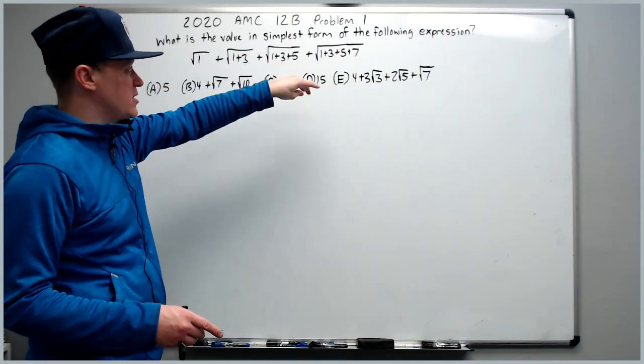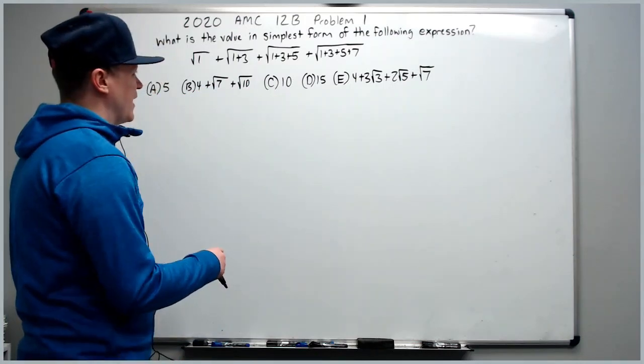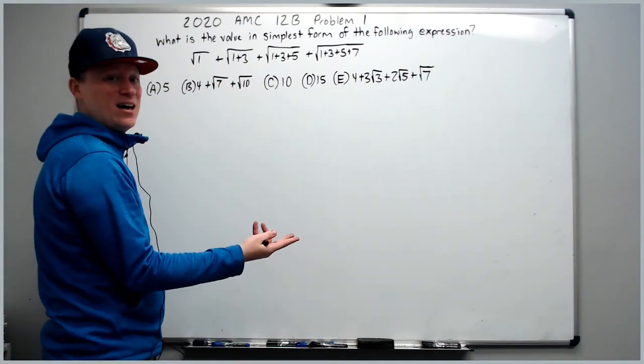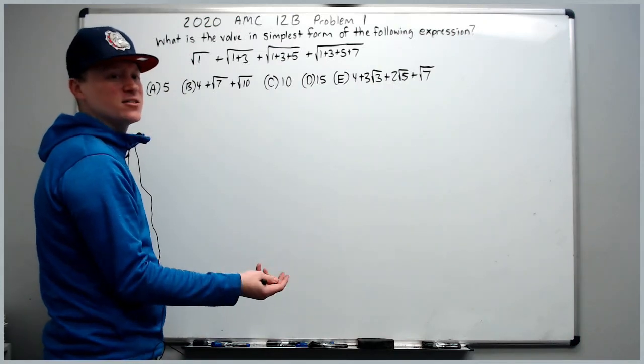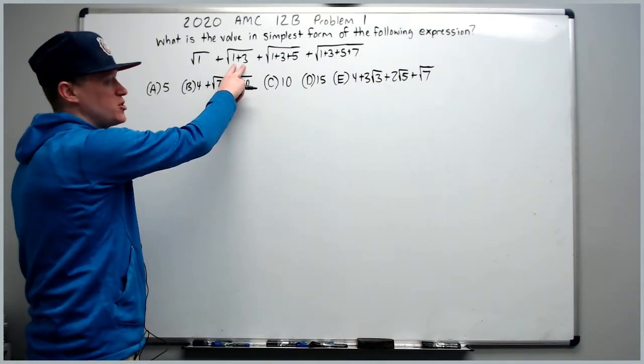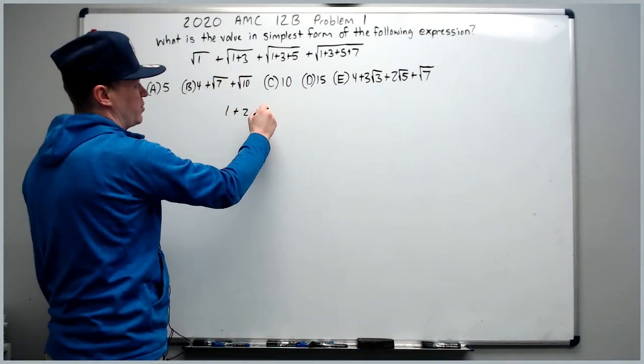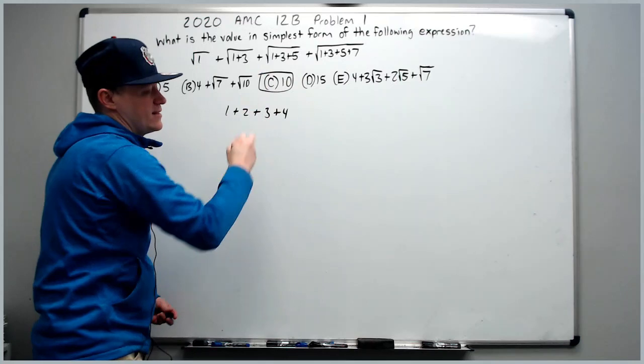What is the value in simplest form of this expression? One shortcut you could note is the sum of the first n odd integers is n squared. So since this is the sum of the first two, it's 2 squared. So I get 1 plus 2 after I square root, plus 3 plus 4 to get 10.